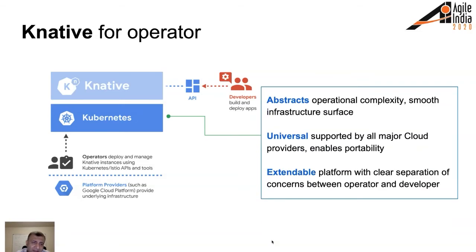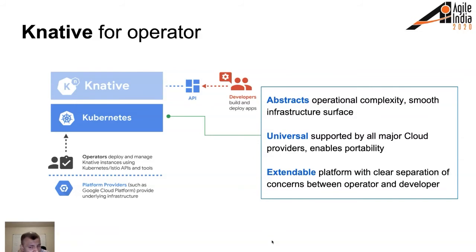From an operator point of view, Knative runs on top of Kubernetes and abstracts out all operational complexity, giving you smooth infrastructure. Kubernetes is universally supported by all major cloud vendors: Google has Google Kubernetes Engine (GKE), Azure has AKS, and AWS has EKS (Elastic Kubernetes Service). You can also deploy on your own open source Kubernetes cluster. It's a platform for building platforms — very extensible with an open source API, and the entire Kubernetes source code is available on GitHub.